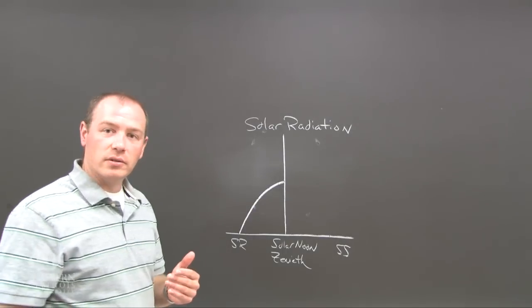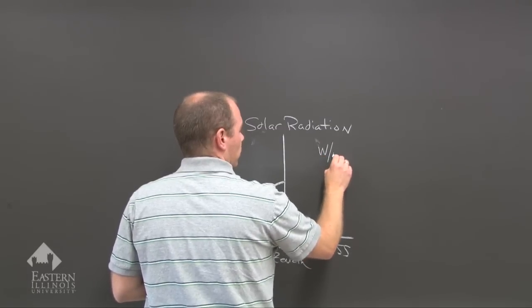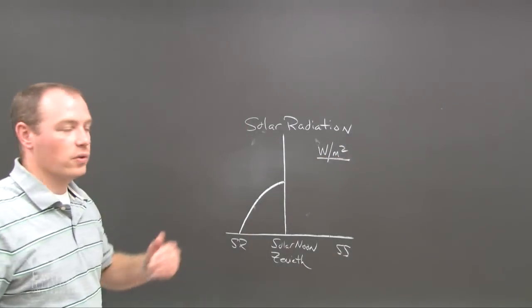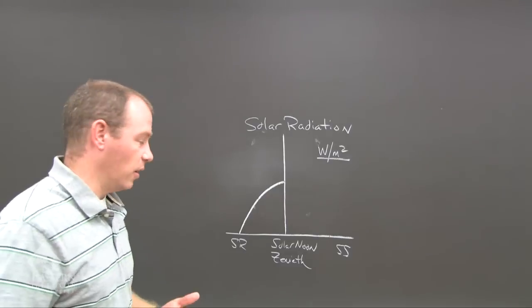And solar radiation, how we measure it, is expressed in watts per meter squared. That is the unit that we use to express how much radiation is being received at a particular location.